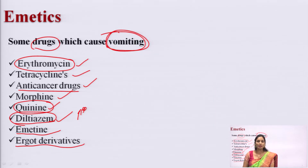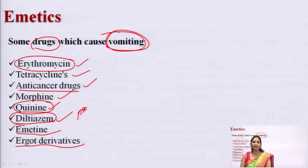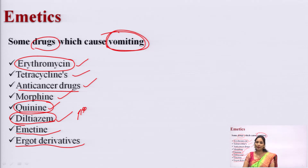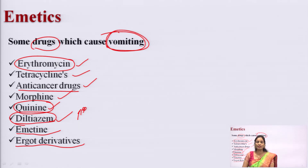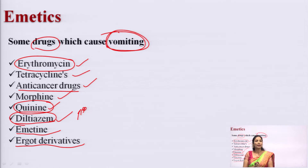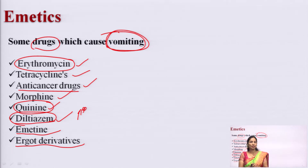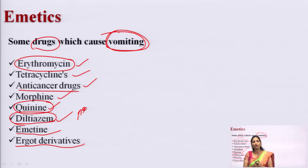Emetic drugs should not be given in certain conditions. Emetics should not be given to persons having renal problems, hypertension, or pulmonary tuberculosis. They should be avoided in children, especially infants and neonates, and should not be given to pregnant women and elderly persons. They are also contraindicated in persons with congestive heart failure.